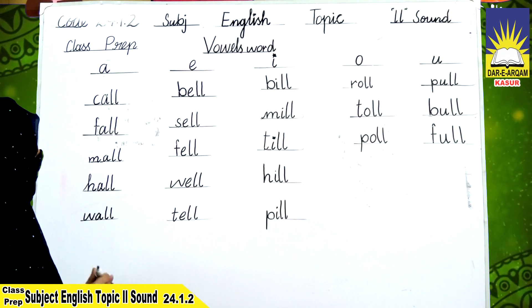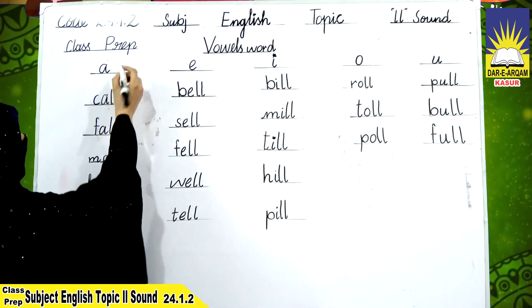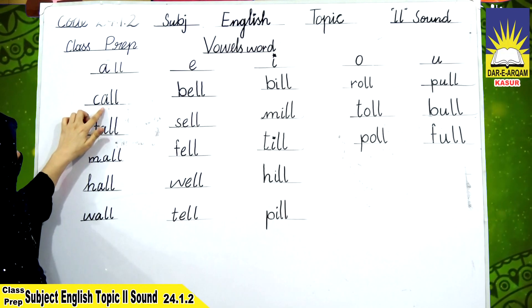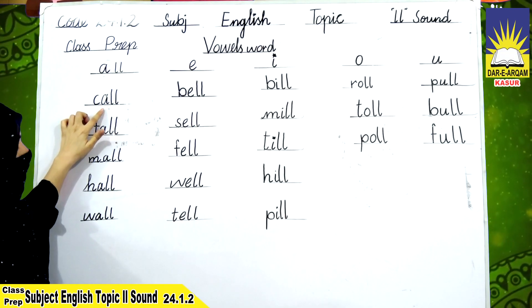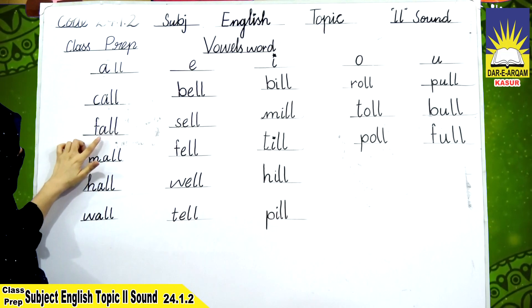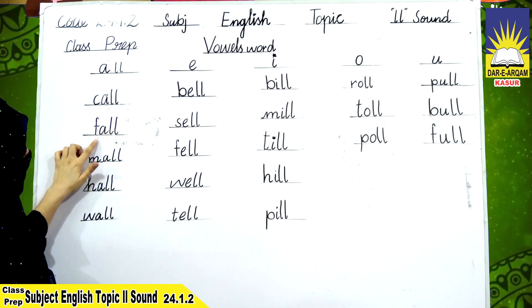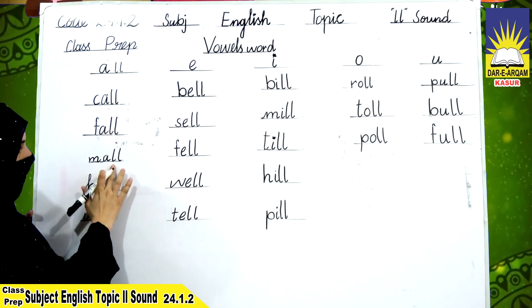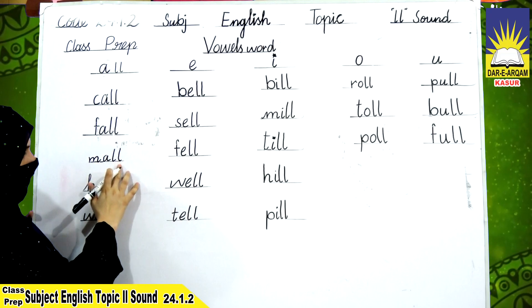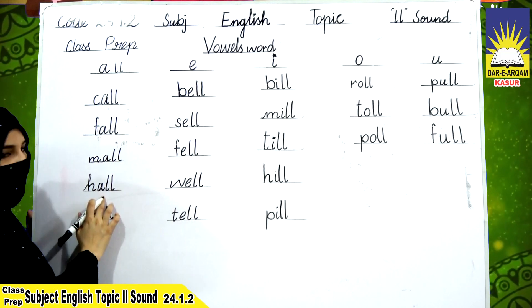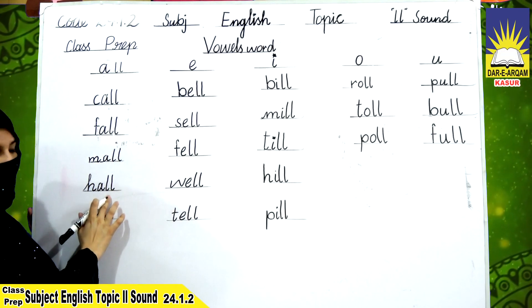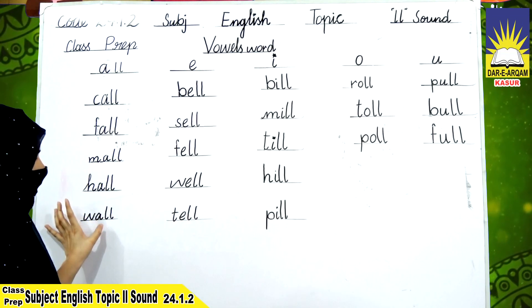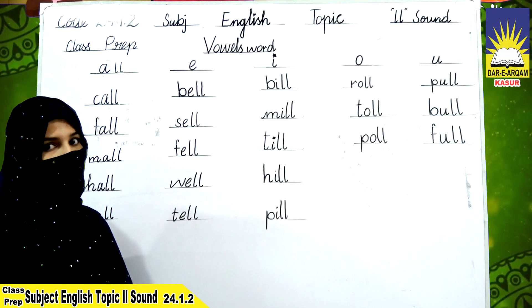A-L-L: all. C-A-L-L: call — K, all, call. F-A-L-L: fall — F, all, fall. M-A-L-L: mall — M, all, mall. H-A-L-L: hall — H, all, hall. W-A-L-L: wall — W, all, wall.